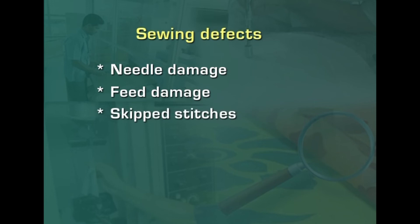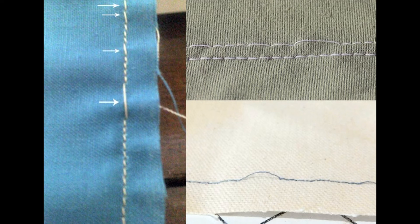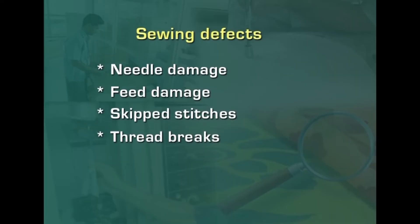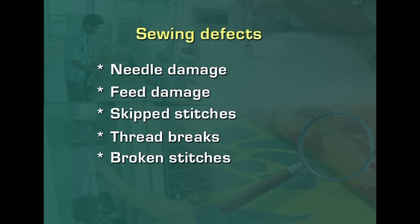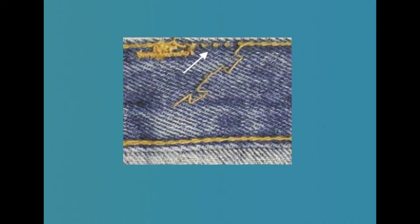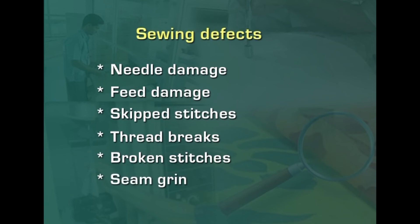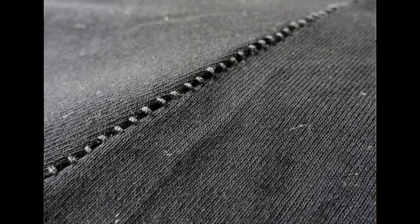Skipped stitches arise from the hook irregularly failing to pick up the loop of thread from the needle's eye. Thread breaks arise from thread too thick or too thin for the needle, an operator working unrhythmically, or too-tight tensions. Broken stitches arise from wrong stitch type, too-tight tensions, a badly formed joint in the seam where the second line of stitching runs over the first and cracks it, sharp feeds, or too great a pressure. Seam grin arises from too loose a tension, too large a stretch, or use of a wrong stitch type.